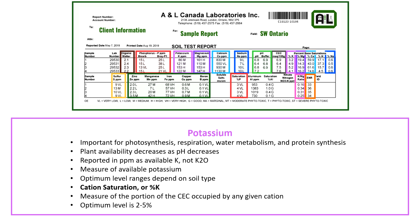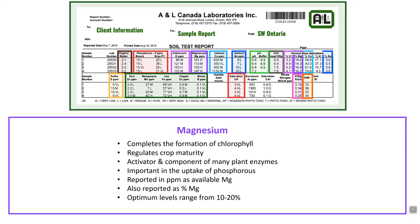Optimum potassium ranges depend on the type of soil you have, based on your CEC. Percent K is a measurement of the K occupied as a cation in that soil, and optimum levels are between two to five percent depending on your soil type.